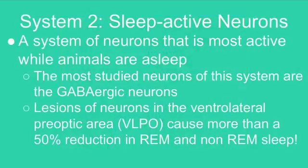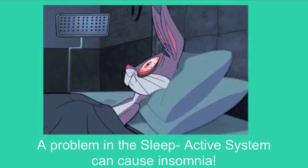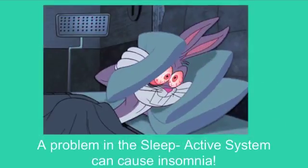The second system of neurons is called the sleep-active neuron system — a system of neurons that is most active while animals are asleep. The most studied neurons of this system are the GABAergic neurons. Lesions of neurons in the ventrolateral preoptic area cause more than a 50% reduction in REM and non-REM sleep. A problem in the sleep-active neuron system can cause insomnia.